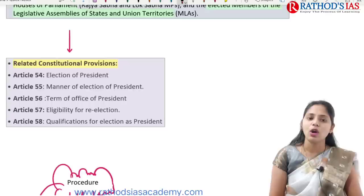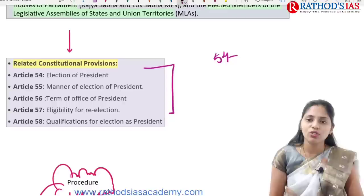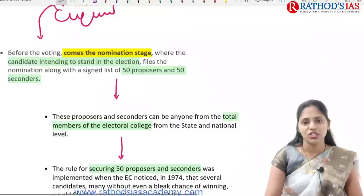Constitutional provisions related to this include: Article 54 — election of president; Article 55 — manner of election; Article 56 — term of office of president; Article 57 — eligibility for election; and Article 58 — qualifications for election as president. These are Articles 54 to 58 of the Indian Constitution dealing with the president. Before voting, we go through the nomination stage.